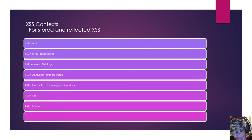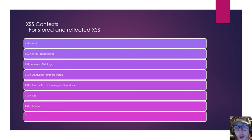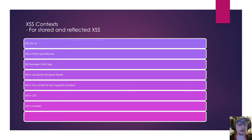JavaScript has a lot of cross-site scripting and we'll focus a lot on JavaScript in this video, but there are more options. Cross-site scripting can happen in JavaScript code, between HTML tags, between HTML tag attributes, in JavaScript template literals, in the context of the Angular JavaScript sandbox, in CSS, in headers — it can happen in so many places. It's amazing.